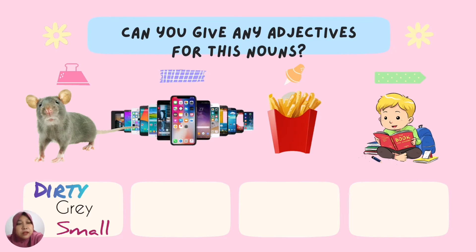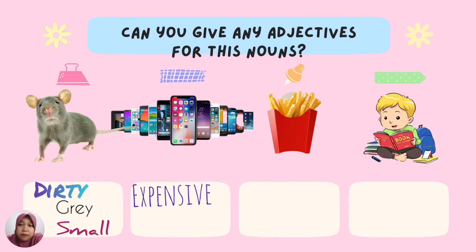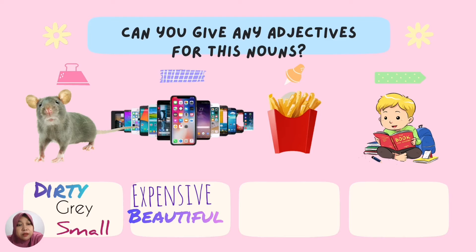Now let's look at the second picture — a mobile phone. You can put the type, size, color, or price as adjectives. For example, this one can be expensive, beautiful, or modern. Yes, modern can be an adjective — good.